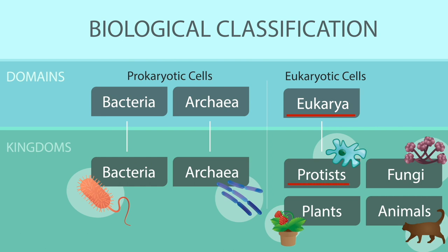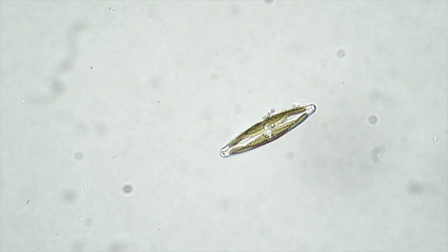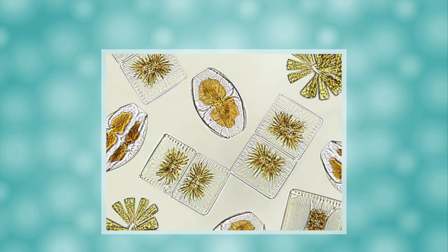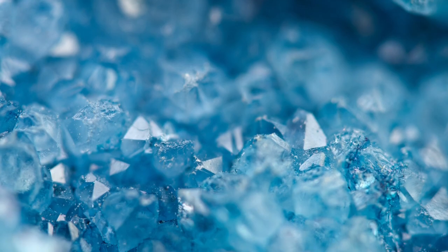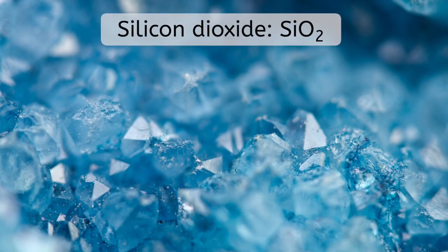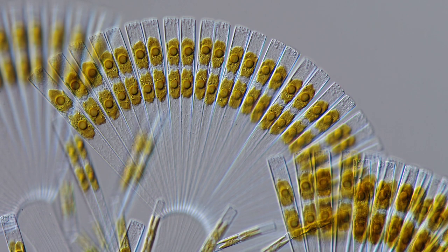Once in the eukarya domain, we'll start with protists. Most of these organisms are single-celled but still manage to achieve a staggering amount of diversity. For example, look at the variety of shapes made by these diatoms — plant-like protists that can do photosynthesis. Their cell walls are made of silicon dioxide, a compound often used to make glass. It has been said, then, that they live in glass houses.